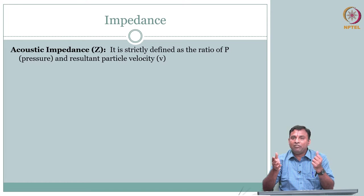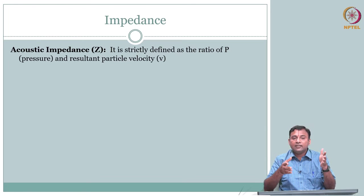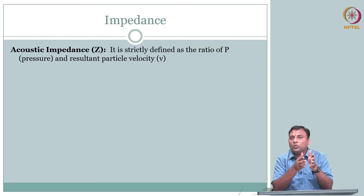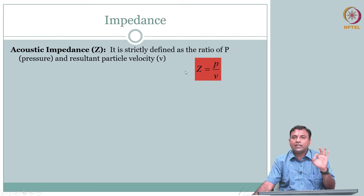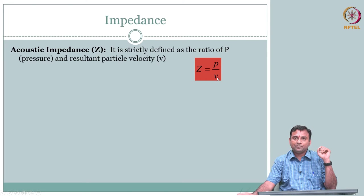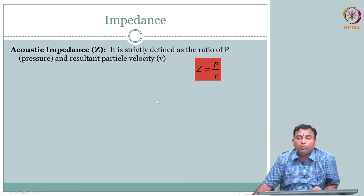The connection between V and I — driver and what is flowing — is resistance. If it has frequency, you talk about impedance. Here you have pressure and the particle has a resultant velocity. So Z, your acoustic impedance, is the ratio of P to V — the driver and the velocity. P by V is your acoustic impedance, and this is a very important quantity.